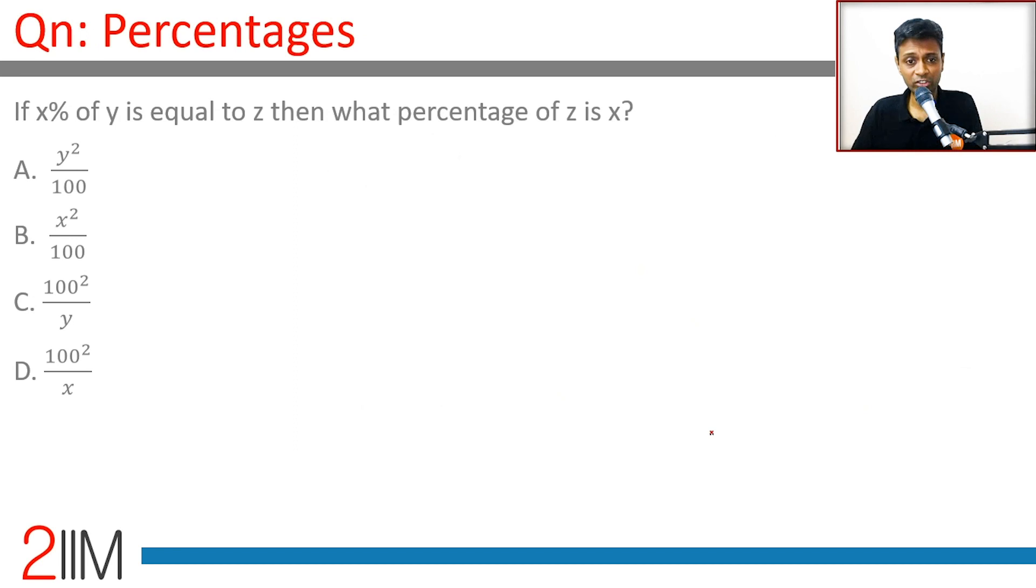If x% of y is equal to z, then what percentage of z is x? x by 100 times y equals z. What percentage of z is x? That is, what percentage of z is x? x by z is what by 100?